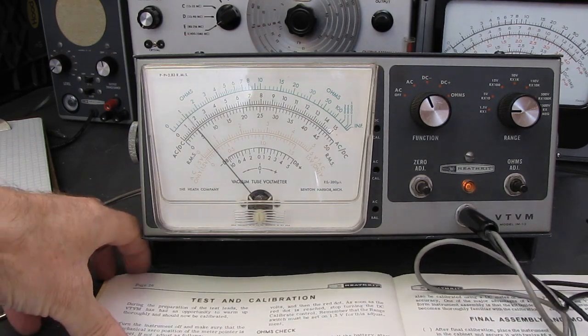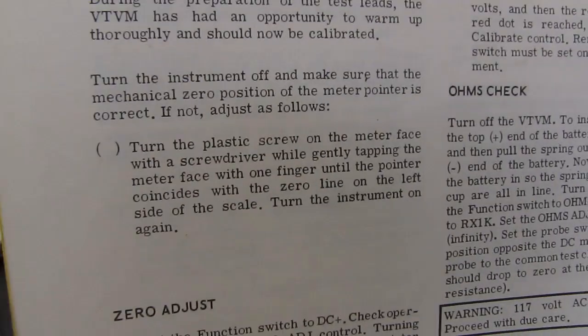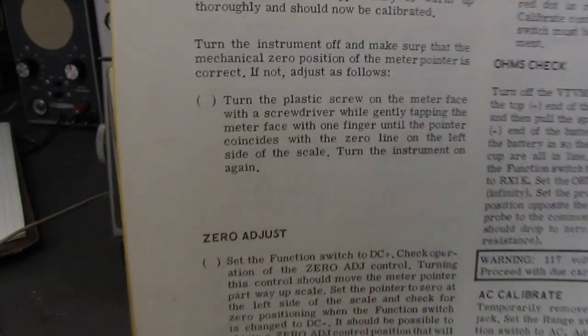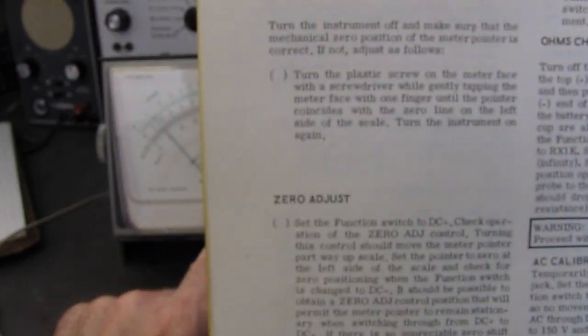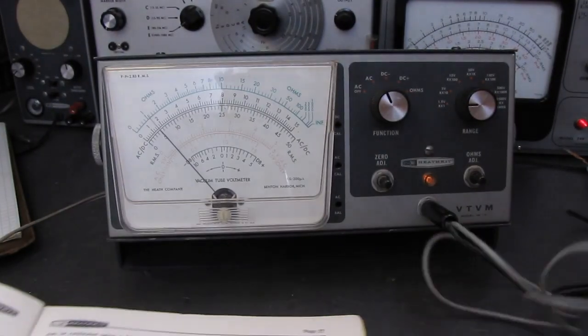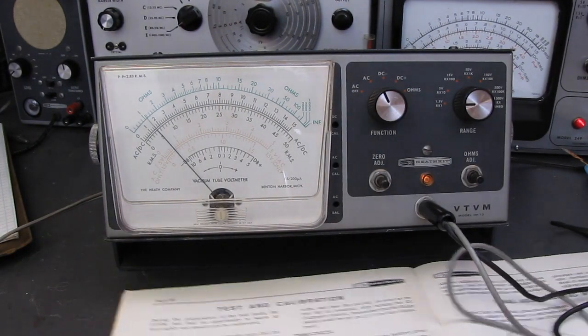I know most of the electronic schools back in the day would say with an analog meter, tap it on the face to make sure it settles. And a lot of manuals, including this Heathkit one, state right here. To zero the meter, adjust the little screw and gently tap on the face to make sure it goes zero. So let's put that one to bed as well.